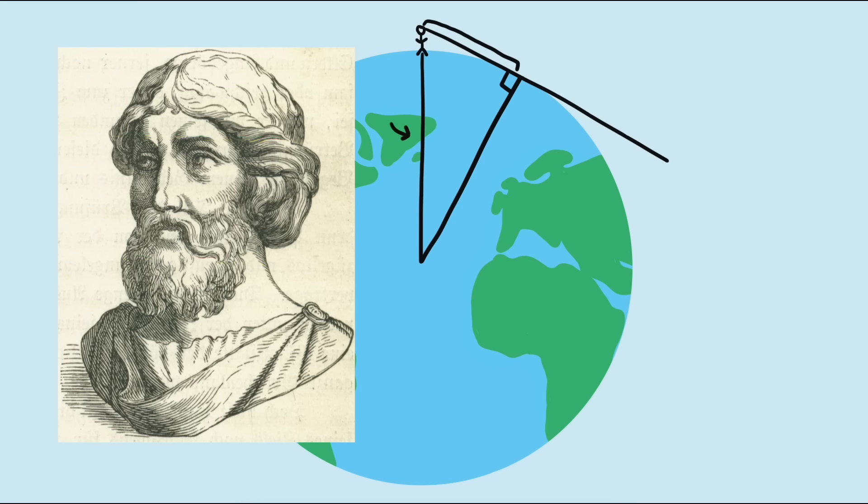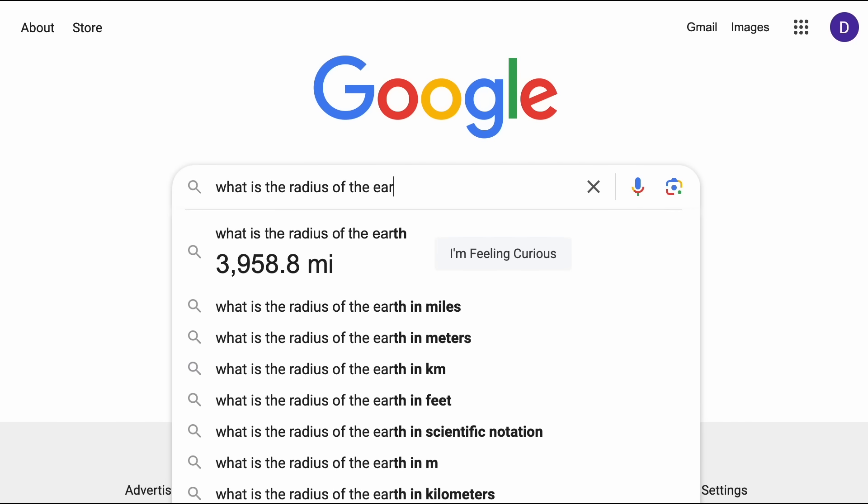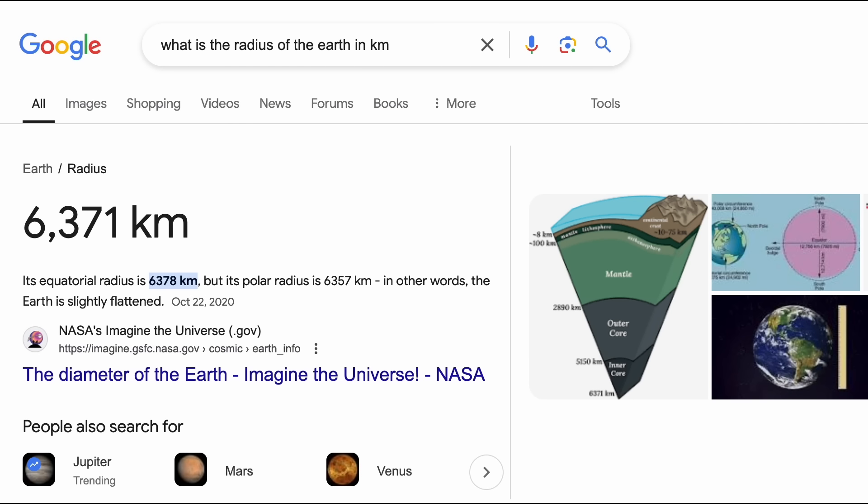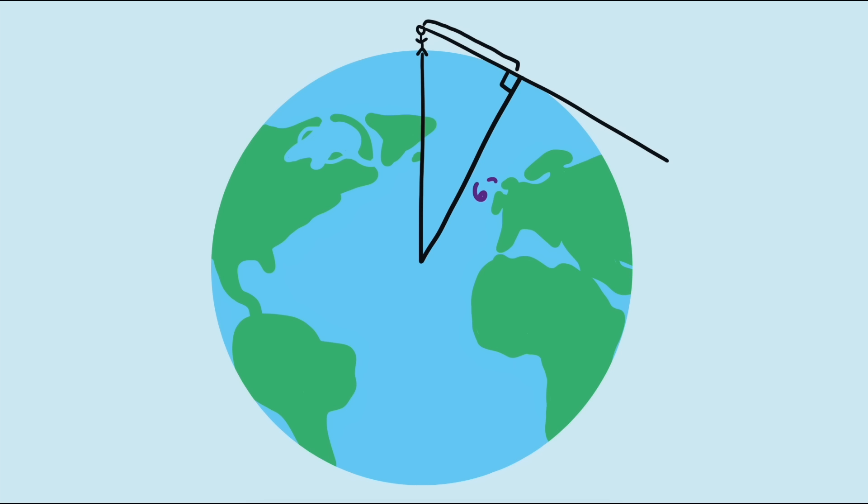We can find these two distances using the Pythagorean Theorem. I looked up the radius of the Earth and found it's about 6,378.1 kilometers. So that is this leg of the triangle, and the length of the hypotenuse is the radius of the Earth plus the height of my eyes, which are about 1.8 meters high.